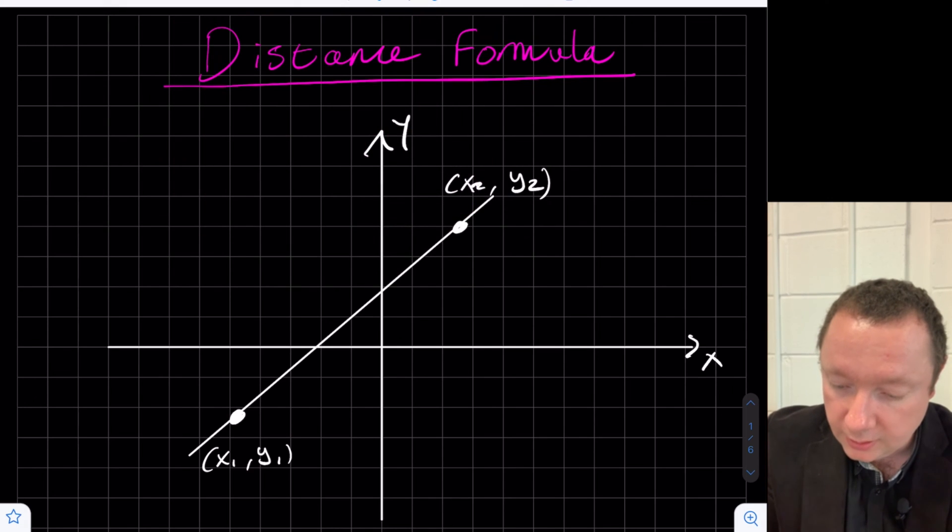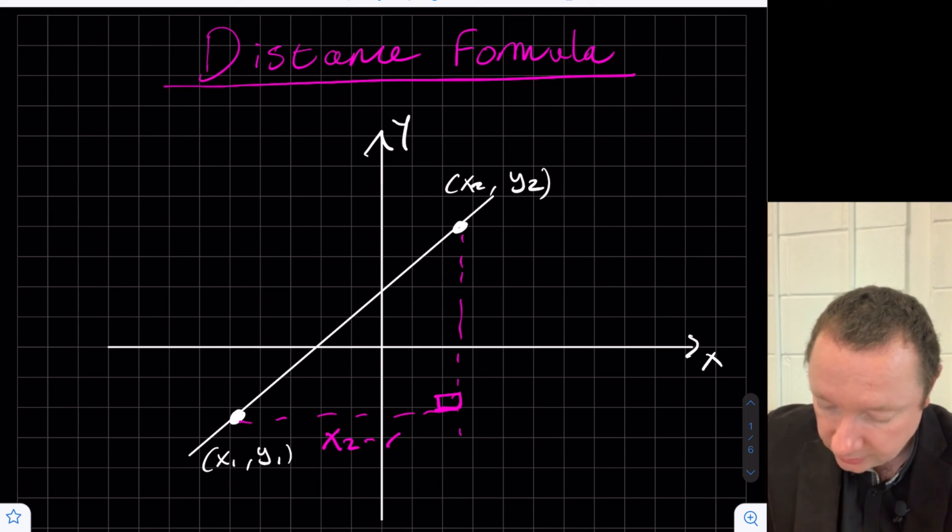Well, I could make a right-angle triangle by doing this. And the distance along the x would simply be the difference between x2 and x1. So that would be x2 minus x1. And similarly, going up the y-axis,